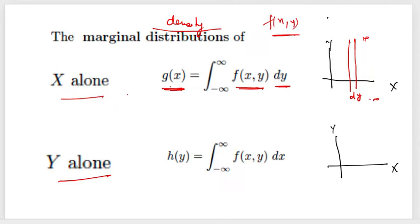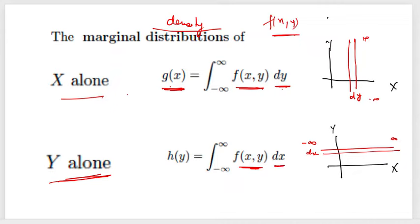When we integrate over all y values, only the x variable is retained and we get the marginal density function for x, denoted g(x). Similarly, if we take f(x, y) and integrate in the direction of x, collecting all values of x, the function of y alone remains and we write it as h(y). The marginal density function for x is a function of x alone and for y is a function of y alone.